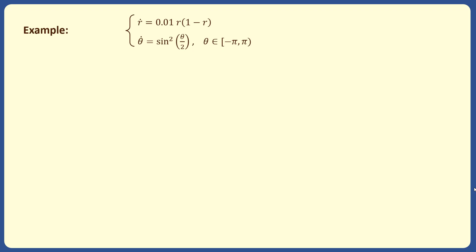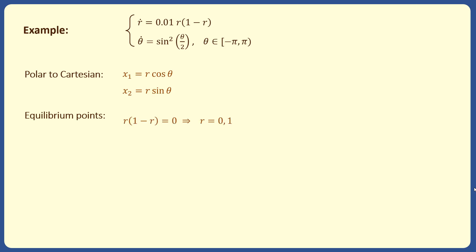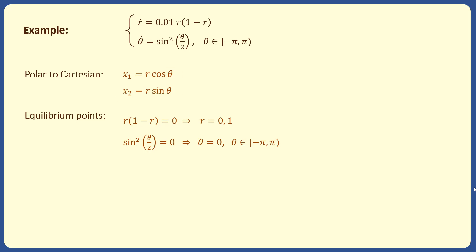Consider a system with two state variables in the polar coordinate system. The system model and solutions can also be represented in Cartesian coordinates using x₁ = r·cos(θ) and x₂ = r·sin(θ). We find the equilibrium points by setting r_dot = 0, obtaining r = 0 or r = 1. Setting theta_dot = 0 gives theta = 0 (since theta ∈ [-π, π)). Using the x₁ and x₂ equations, the equilibrium points are xₑ = (0, 0) and xₑ = (1, 0).